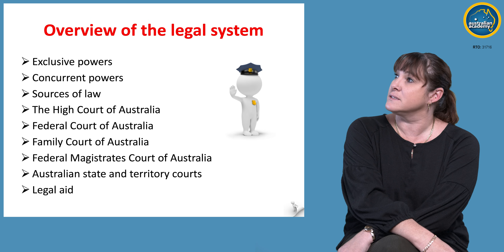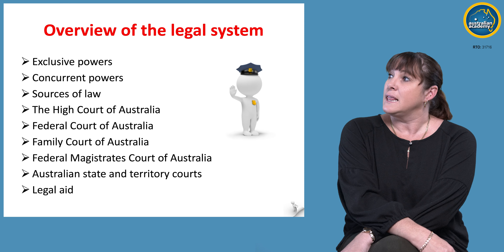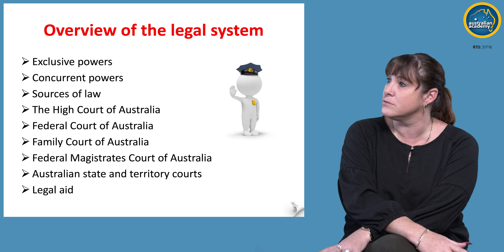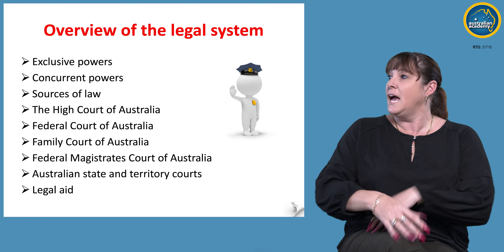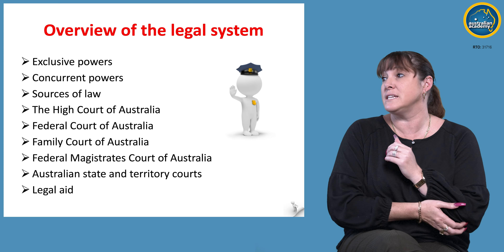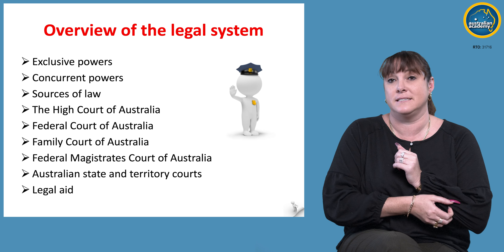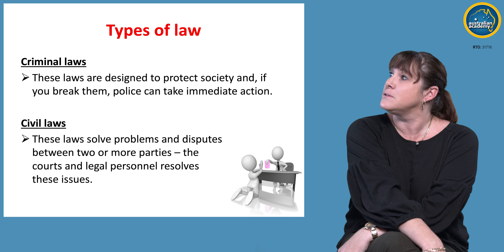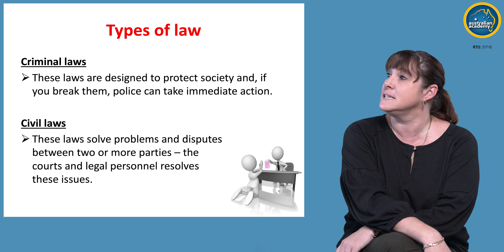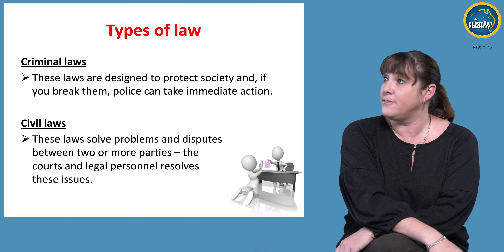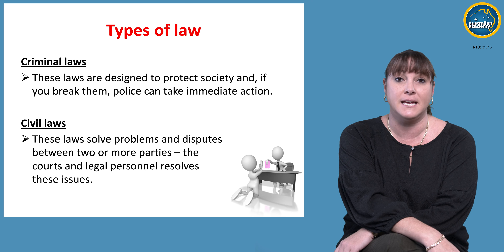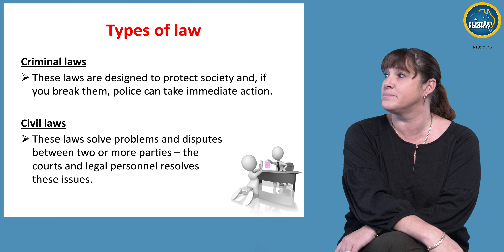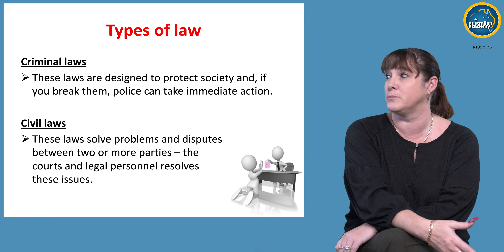The overview of the legal system covers the sources of law: we have the High Court, the Federal Court, the Family Court, the Magistrates Court, and Legal Aid. In terms of types of law, we have criminal law — designed to protect society, where police can take immediate action if broken — and civil law, which solves problems and disputes between two or more parties.